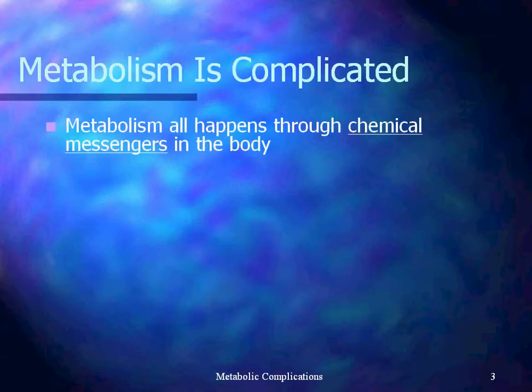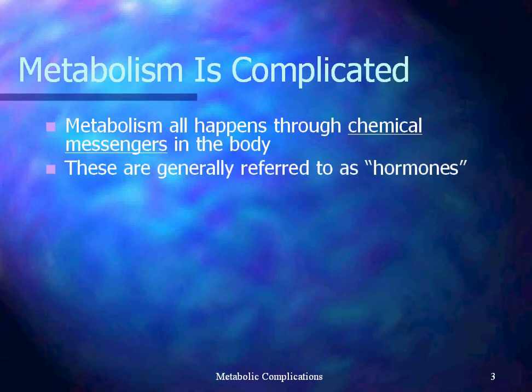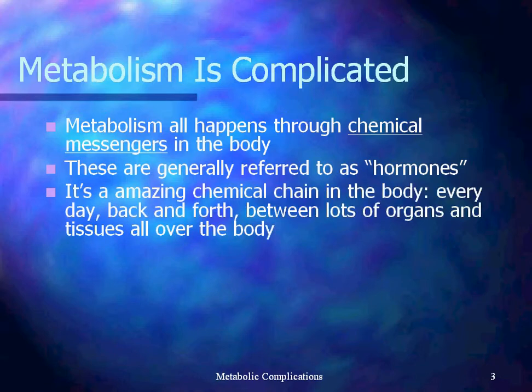So obviously it's complicated. Metabolism happens through chemical messengers in the body, and these are generally referred to as hormones. When we say hormones, most people think of sex hormones, but there are a lot of things that count as hormones that don't have anything to do with sex. Metabolism is a chemical chain — a messenger from one organ goes in the bloodstream down to the next organ, which triggers that organ to have a response and send a messenger to the next organ. It's this chain back and forth between organs and tissues all over the body — a symphony that happens 24-7 that we don't even think about.